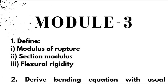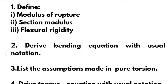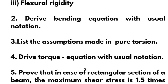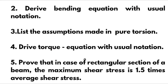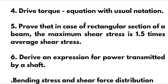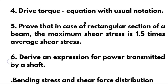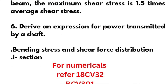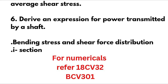Coming to Module 3, which is again a passing module: define modulus of rupture, section modulus, and flexural rigidity. Derive the bending equation with usual notations and list the assumptions made in pure bending. Derive the torque equation with usual notation. Prove that in case of a rectangular section of a beam, the maximum shear stress is 1.5 times the average shear stress. Derive an expression for power transmitted by a shaft. For the numerical part, focus on bending stress and shear stress distribution — I-sections are super important.